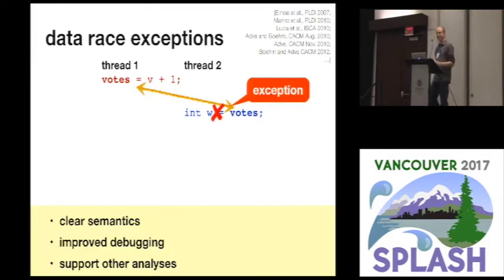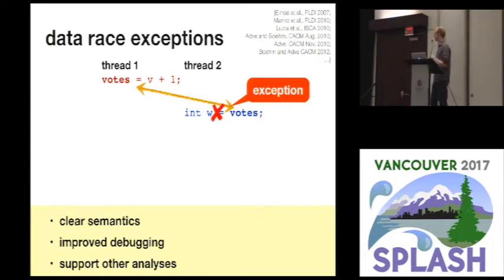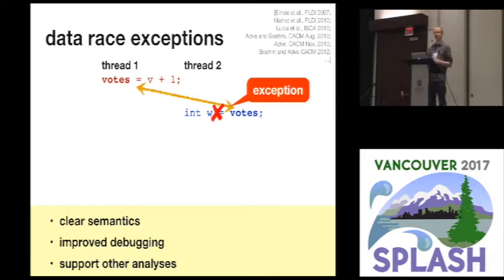Specifically, I want data race exceptions, and I'm not the first to ask for this — this idea is 10 years old at this point. If we had data race exceptions, this would really clean up the semantics of shared memory multithreading, and it would improve the transparency of debugging greatly.